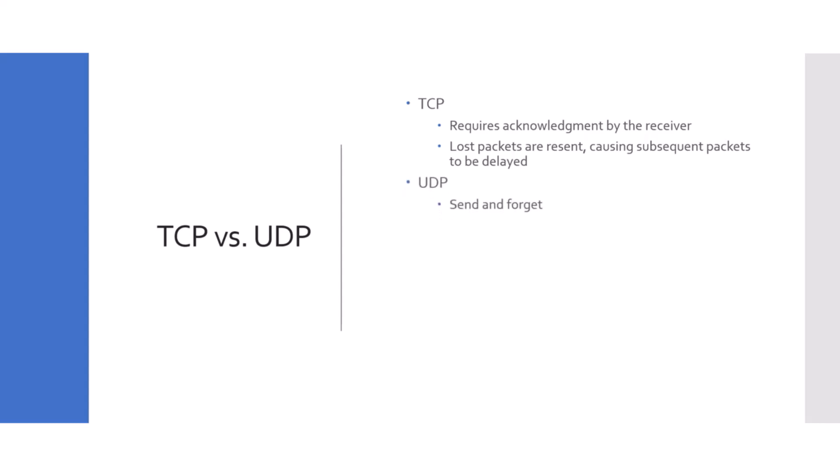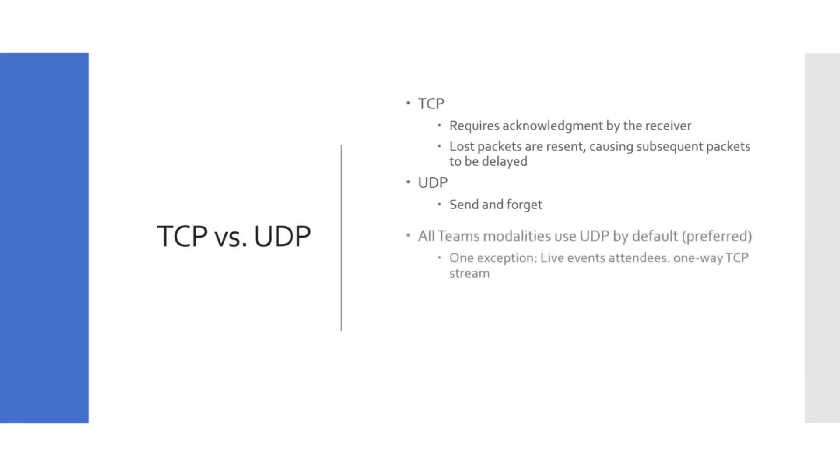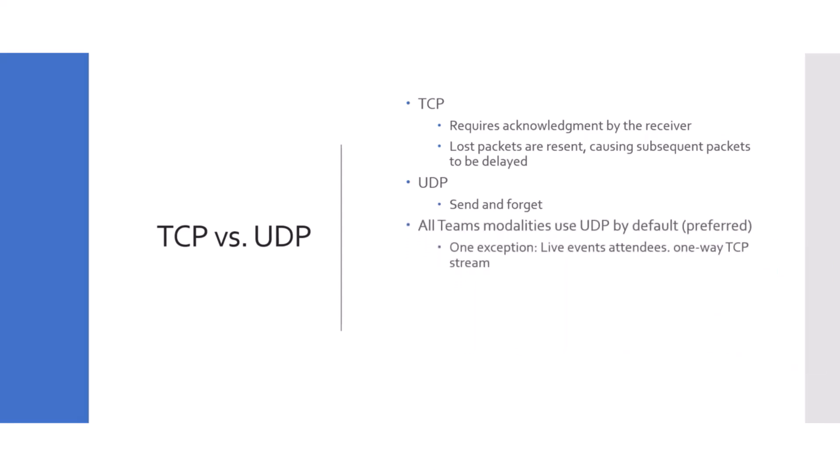On the other hand, we have UDP — User Datagram Protocol — which is send-and-forget: no acknowledgement. Once we send the packets from the source to the destination, it just fires off and does not wait for acknowledgement. This is called a connectionless protocol. So we have connection-oriented TCP and connectionless UDP, and the question is: which one does Teams use?